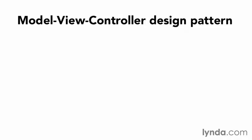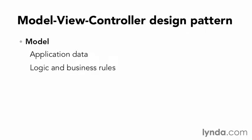In the previous chapter, I discussed how CodeIgniter loosely implements the model-view-controller pattern, then demonstrated both a view and a controller. The final component, the model, traditionally contains application data, logic and business rules, and functions.